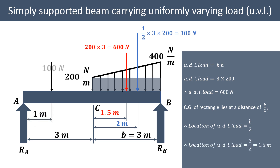We already have a point load of 100 Newton, and that remains unchanged. The rectangular distribution — that is the uniformly distributed load — is 600 Newton acting at 1.5 meters, which is half of the 3 meter base length. The remaining part is the uniformly varying load, which is the triangular distribution from zero up to 200 Newton per meter.